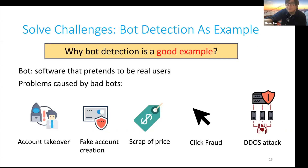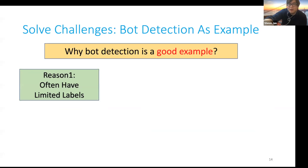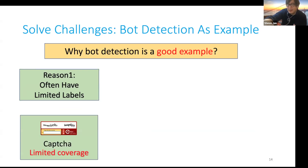In this work, we use bot detection as an example to solve these three challenges. A bot is software that pretends to be a real user. Some internet bad bots are a threat — for example, account takeover or data scraping. It is a security problem. Why is bot detection a good example for studying these challenges? First, limited labels in bot detection: we send CAPTCHAs to users, and if they cannot solve them, it is a strong indication they are bots. However, we cannot send CAPTCHAs to everybody, so there is a limitation in coverage.